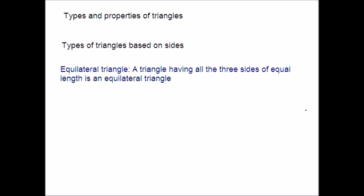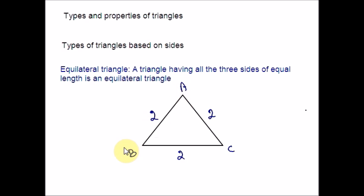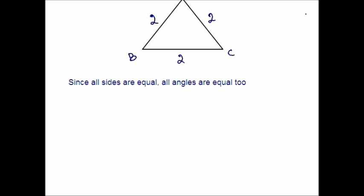Equilateral triangle — by the name itself, you can tell that all three sides are equal. The triangle having all three sides of equal length is called an equilateral triangle. For example, AB is equal to 2, BC is equal to 2, and AC is equal to 2. All three sides are the same. Since all the sides are equal, all the angles will also be equal. Please note that too.